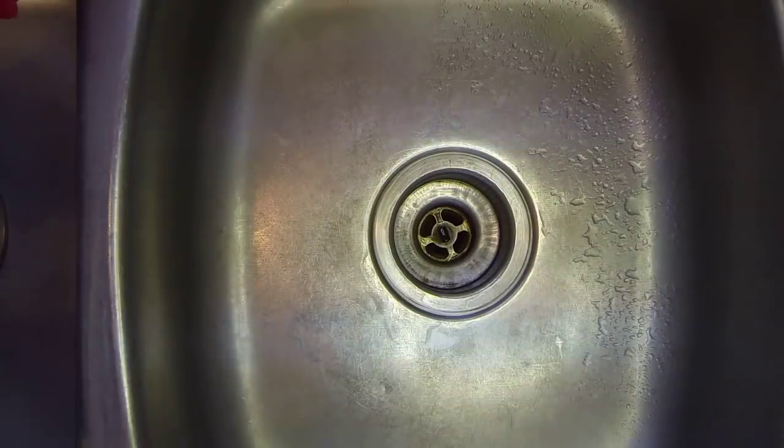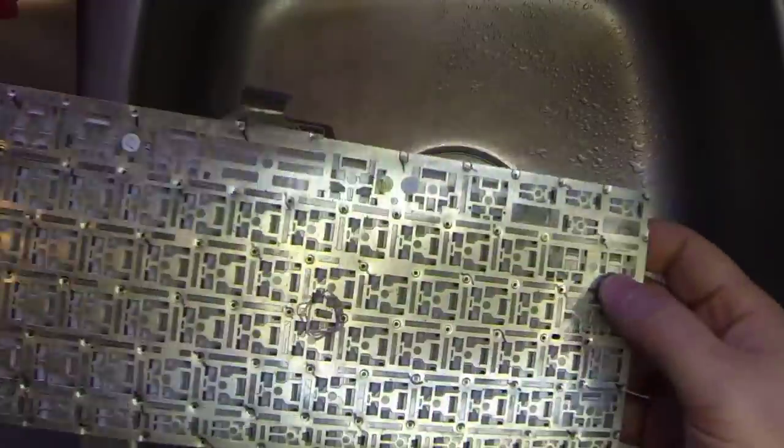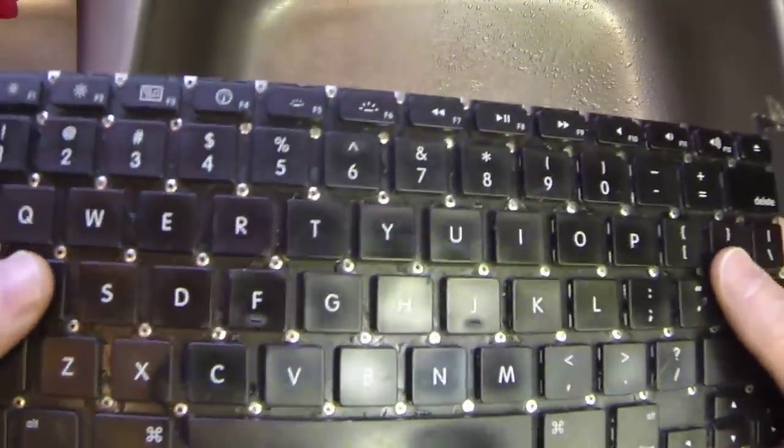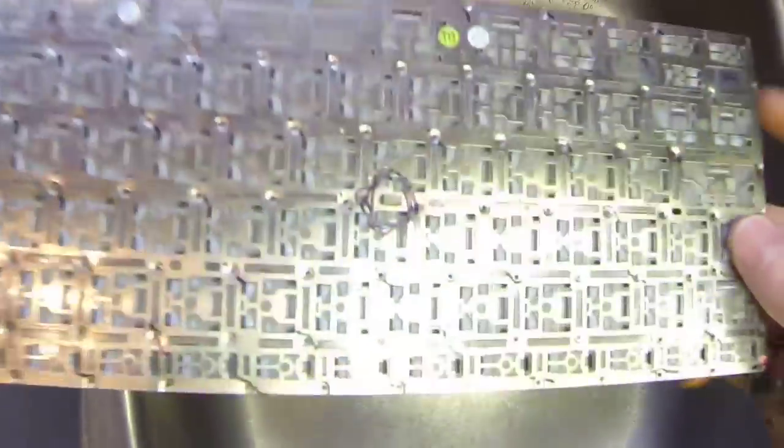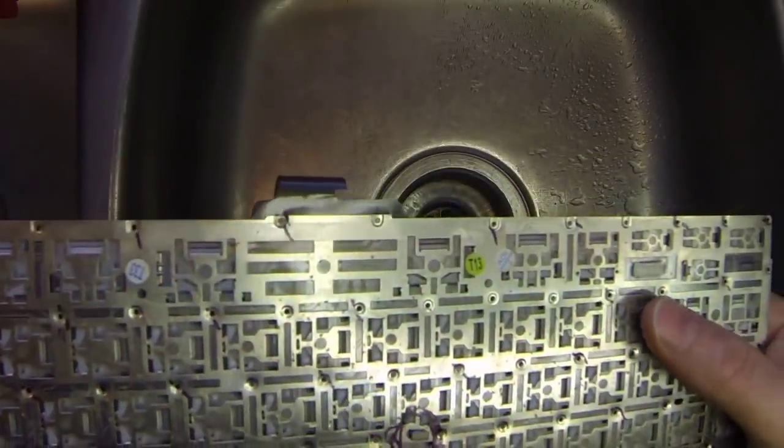So we're actually going to clean this keyboard with some hot water, maybe some soap if it needs it. And then afterwards, I'm going to dip it in an alcohol bath, which the alcohol bath will get into every nook, cranny, crevice, and everything in here and actually expel the water out of it. And then at that point, it gets removed out of the alcohol bath and dried.